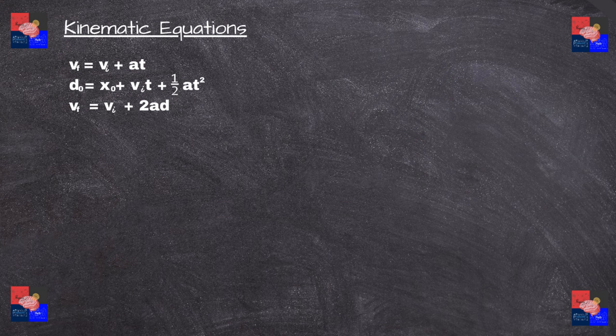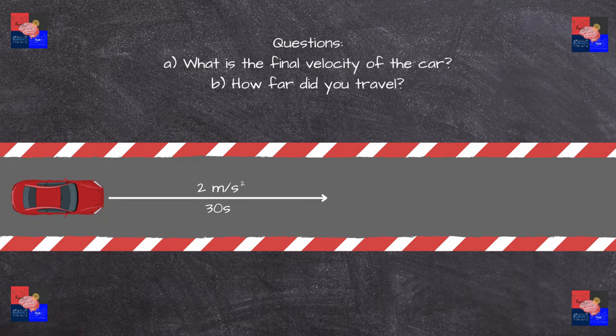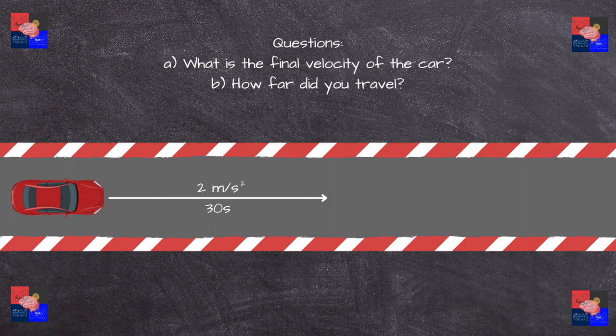So imagine you're in a race course. You turn your car from at rest to a certain velocity for 30 seconds, pressing on the accelerator. You accelerate at 2 meters per second squared. Two questions: one, what is your final velocity, and two, how far did you travel? Here we will be using two equations.